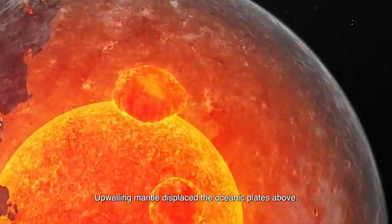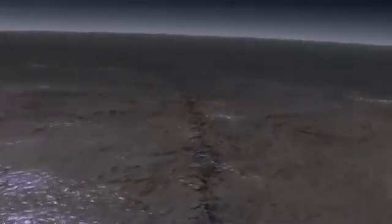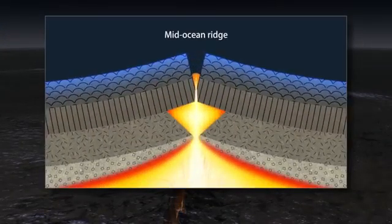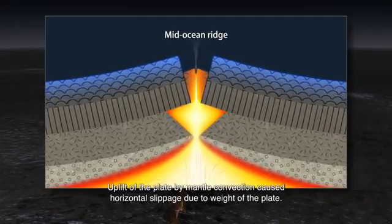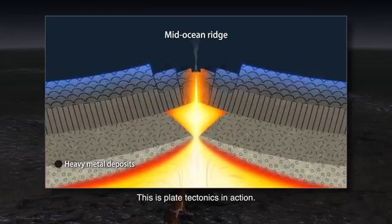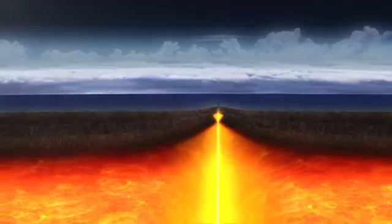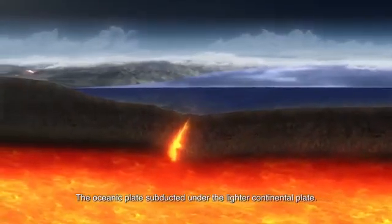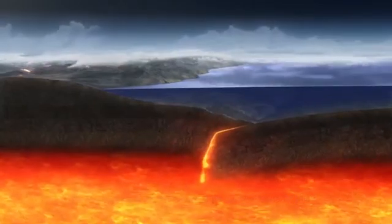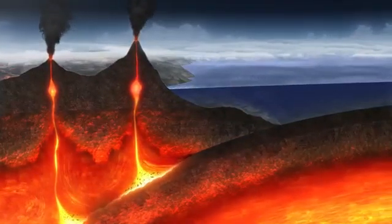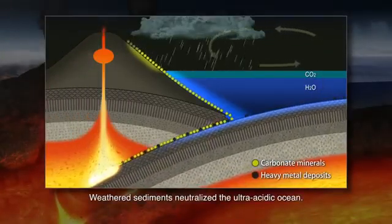Upwelling mantle displaced the oceanic plates above. Uplift of the plate by mantle convection caused horizontal slippage due to the weight of the plate. This is plate tectonics in action. The oceanic plate subducted under the lighter continental plate. Weathered sediments neutralized the ultra-acidic ocean.